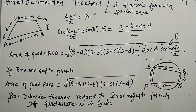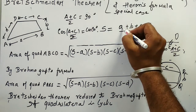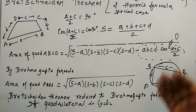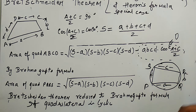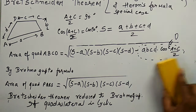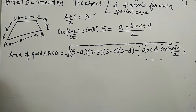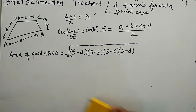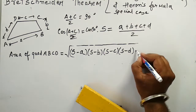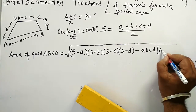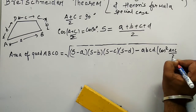Brahmagupta's theorem gives us the formula for calculating the area of a cyclic quadrilateral, and Bretschneider's theorem gives the formula for calculating the area of any quadrilateral. Now I will show you how the same formula can be reduced to Heron's formula, which is used for calculating the area of a triangle by just knowing the measure of its sides.